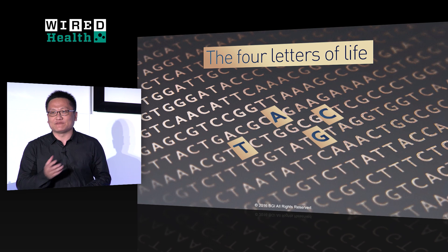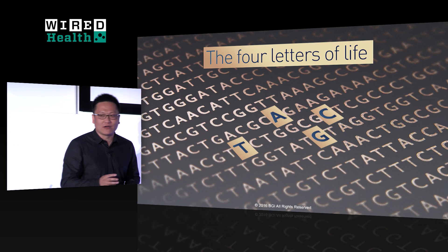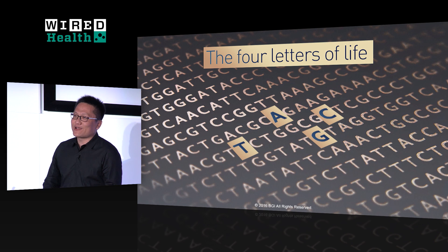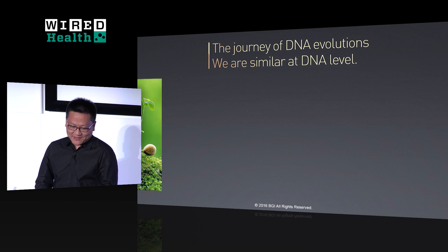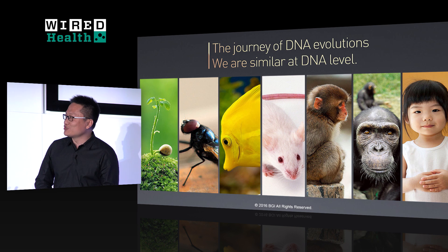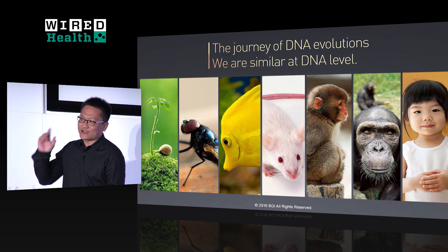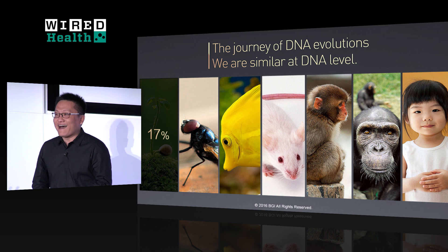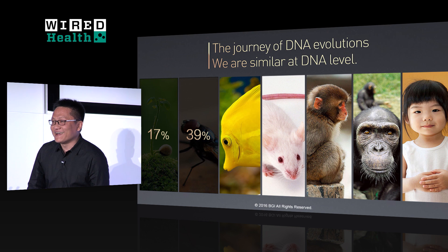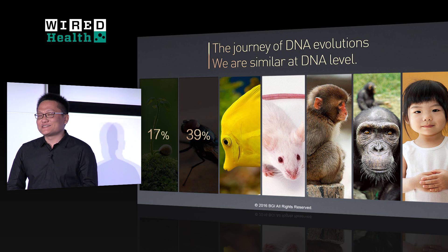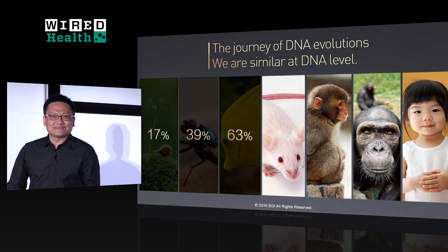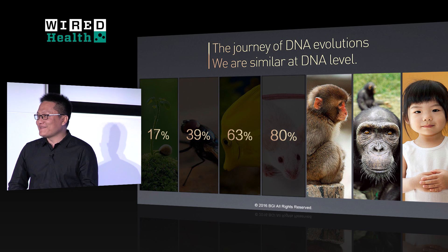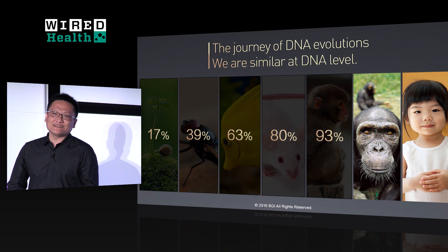Our genome is made of DNA, and our DNA is made of four basic letters — we call them A, T, C, G. Look at this picture. It shows the journey of DNA evolution. How many genes do we share with grass? The answer is 17%. A vessel fly? Almost 40%. A fish? 63%. Mice? 80%. Monkey? 93%. Chimpanzee? 96%.